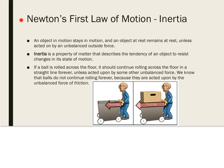Newton's first law of motion talks about inertia. An object in motion stays in motion, and an object at rest remains at rest unless acted on by an unbalanced outside force. Inertia is a property of matter that describes the tendency of an object to resist changes in its state of motion. If a ball is rolled across the floor, it should continue rolling in a straight line forever unless acted upon by some other unbalanced force. We know that balls do not continue rolling forever because they are acted upon by the unbalanced force of friction.